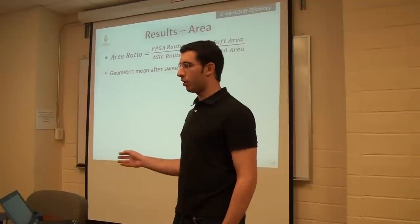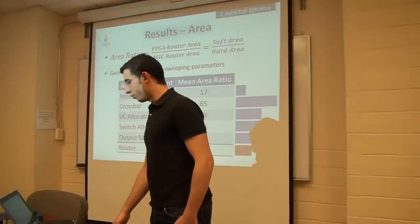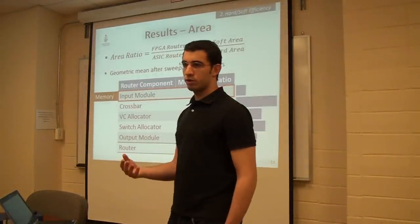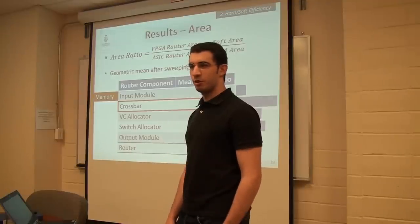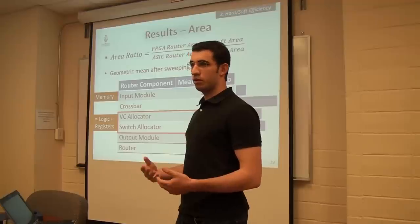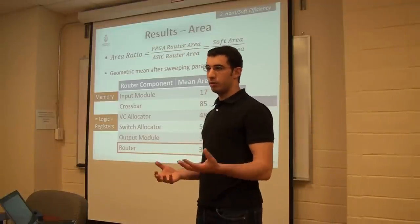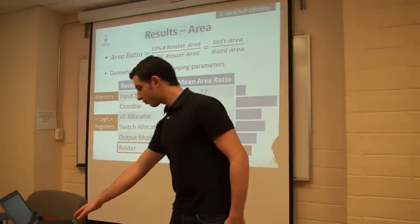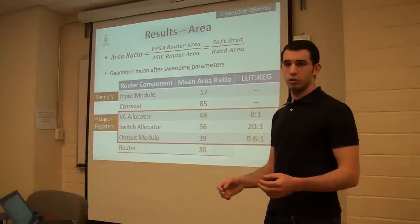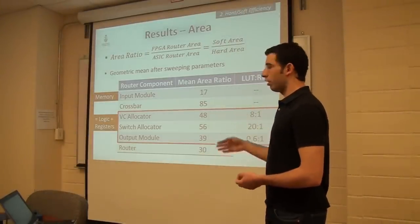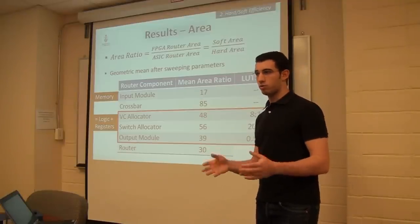After sweeping all parameters we took the geometric mean to give a single-number indication of the gap per component. For area: the best component was the input module due to the dense block RAM; the crossbar was appalling — 85 times worse on the FPGA on average; the allocators, being just logic and registers with no hard blocks, were around 50 times worse. Overall, building a router on the FPGA makes it 30 times larger than on an ASIC. An interesting correlation: Stratix 3 has a LUT-to-register ratio of 1:1, and the more a component deviated from that ratio, the larger the area gap.